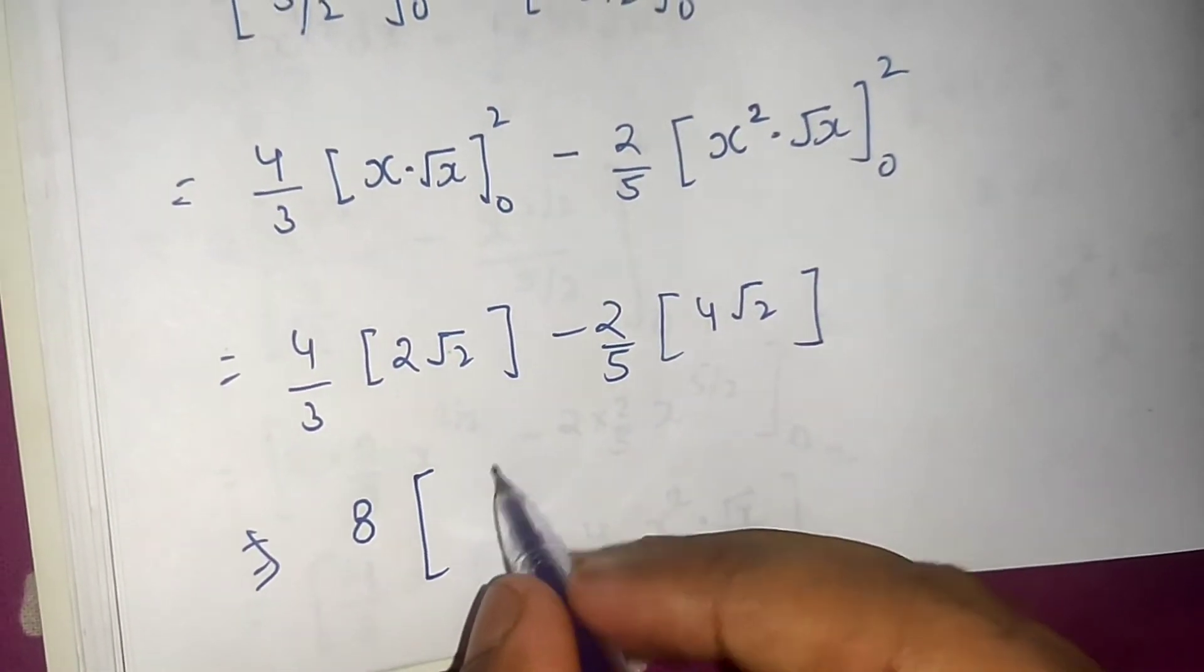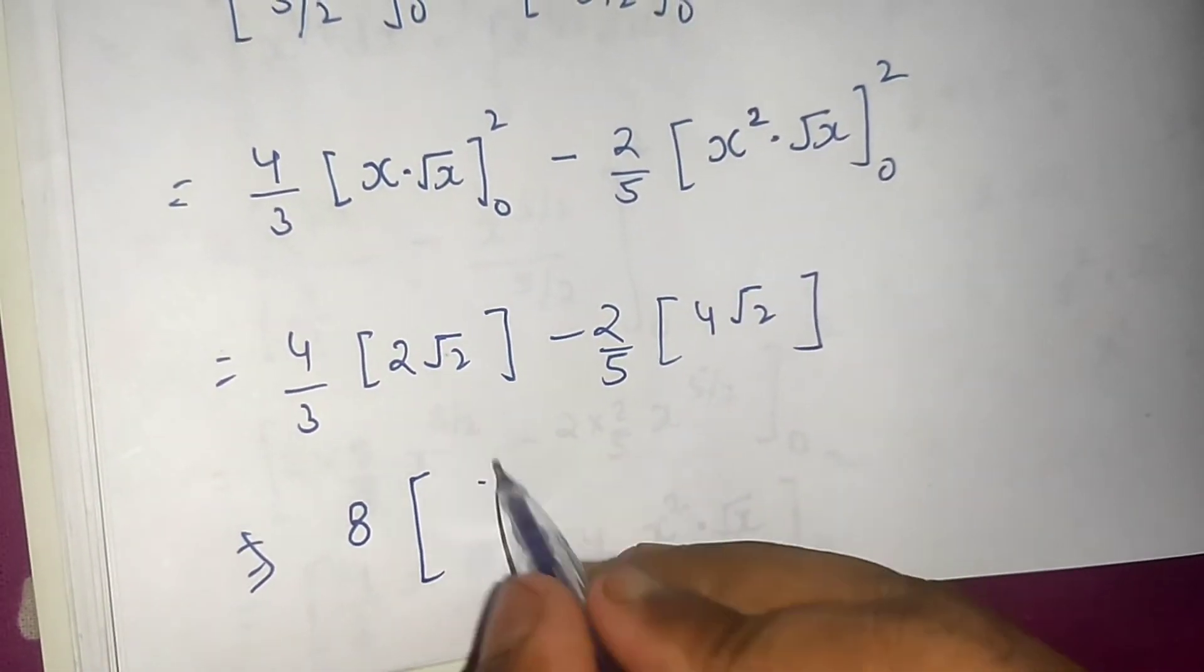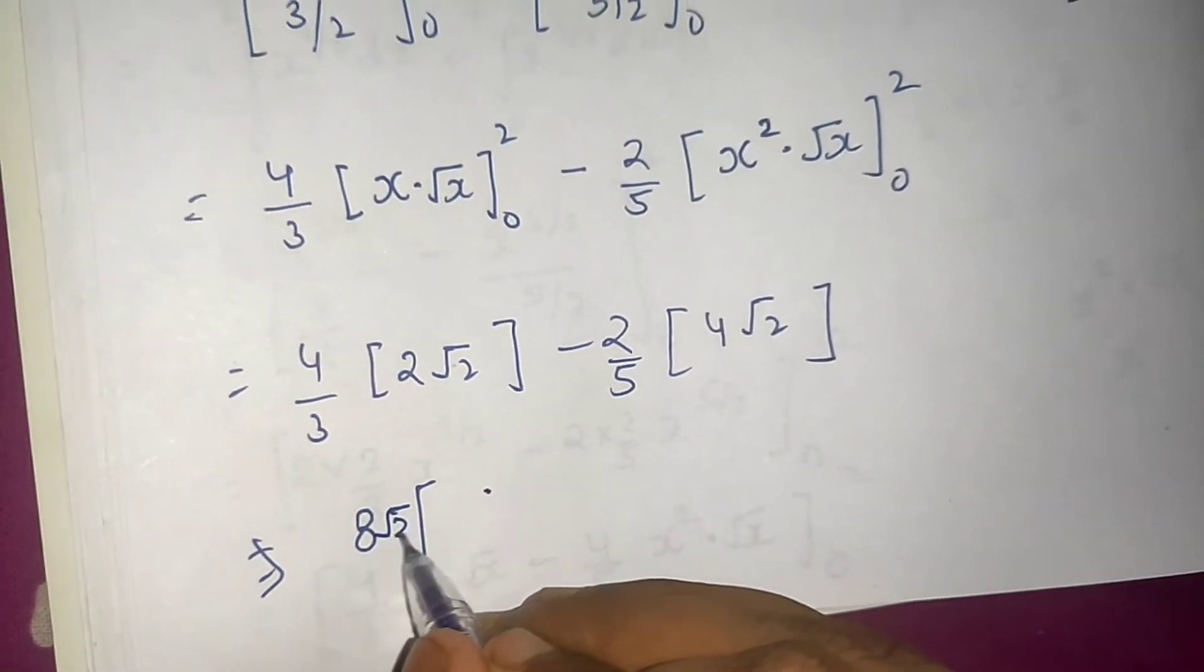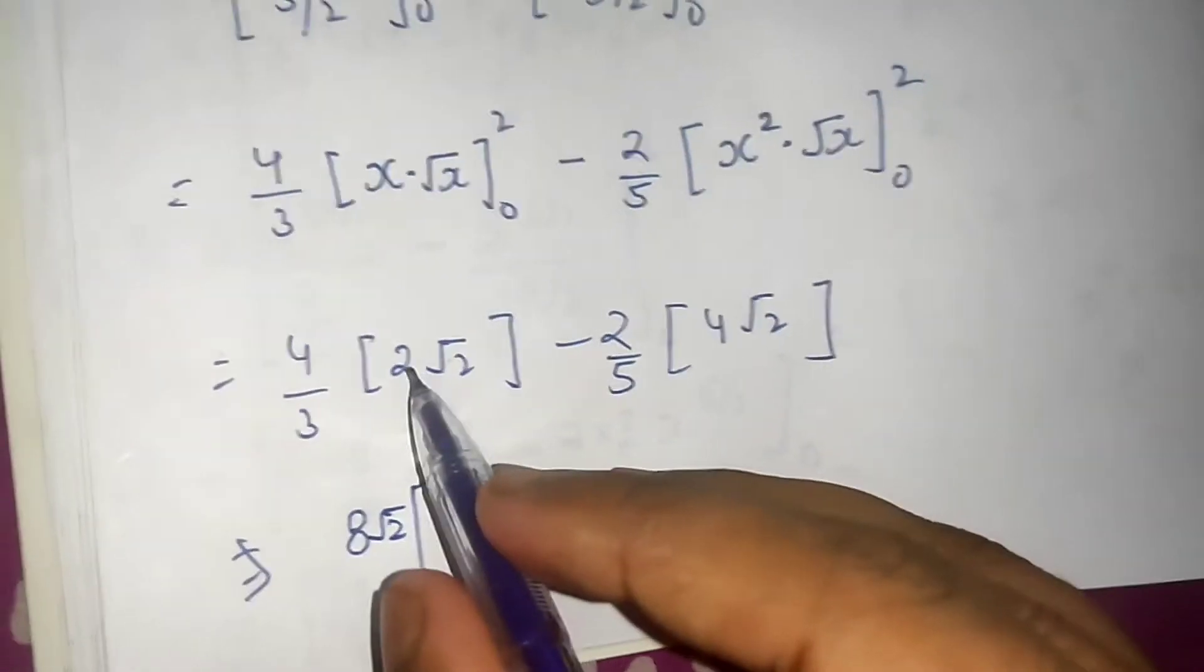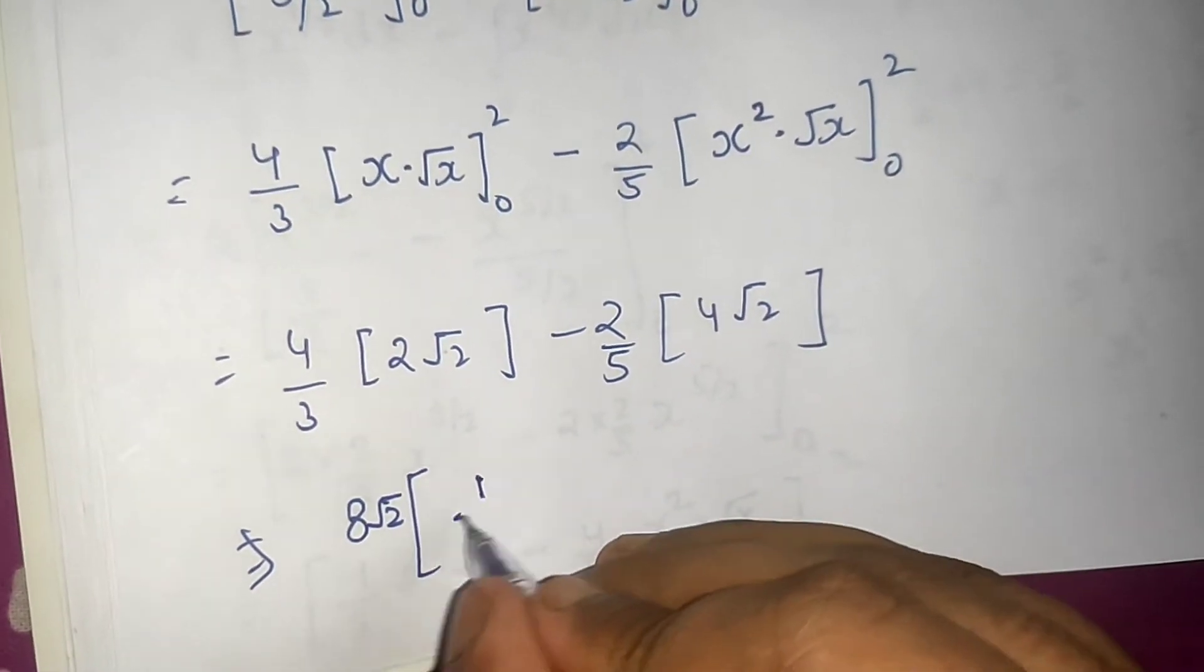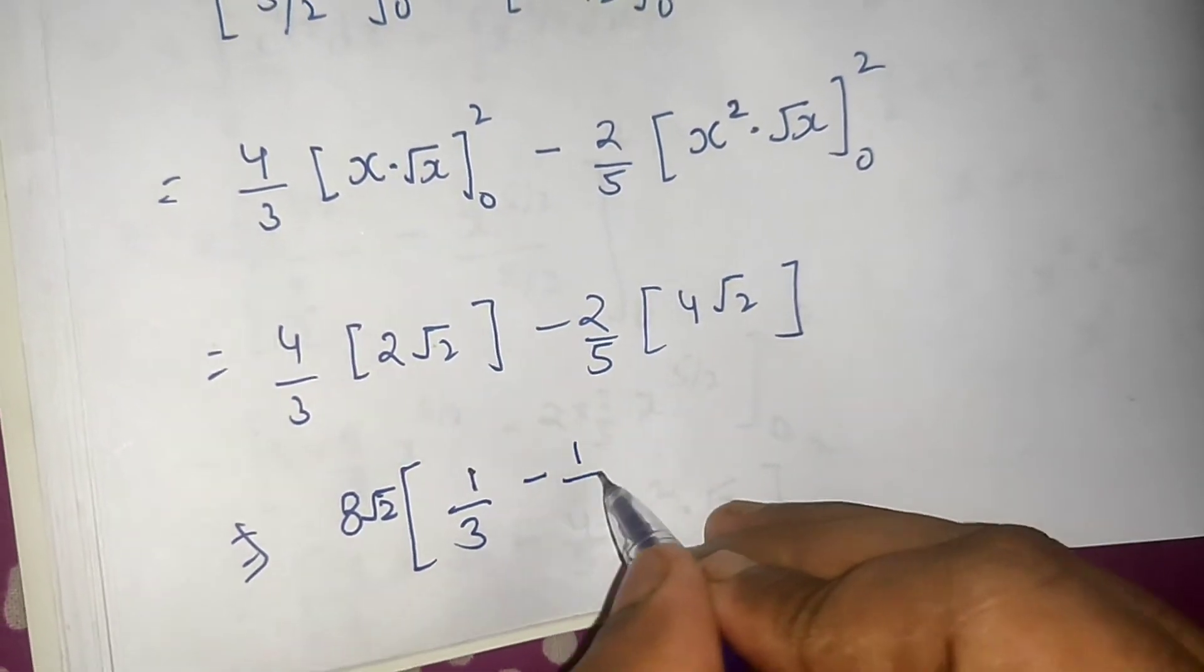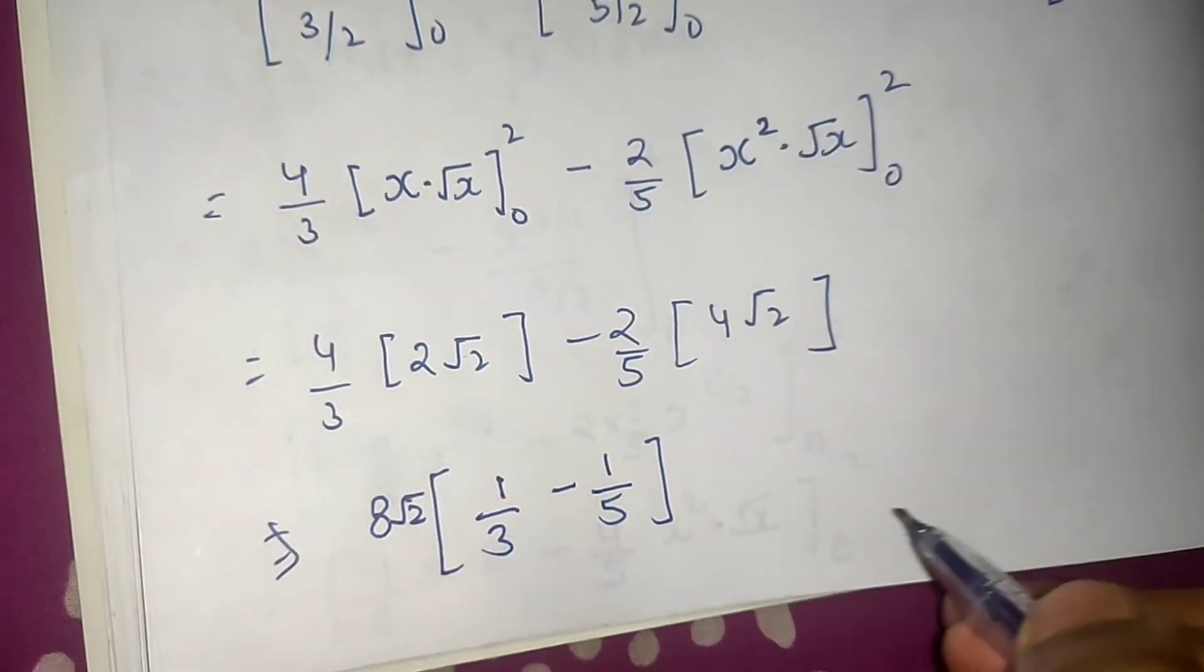So if the moment I take 8 common I am left with, also not only 8, root 2 is also coming. So 8 root 2 if I take common, I am left with 1 by 3 from the first bracket and 8 root 2 if I take common I am getting minus 1 by 5 from the second bracket.